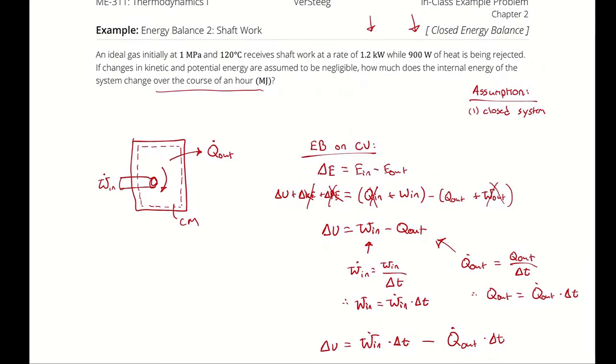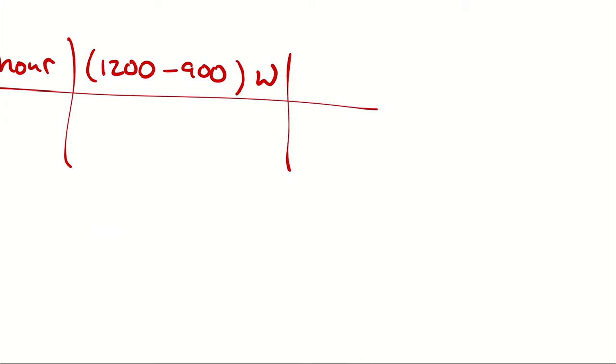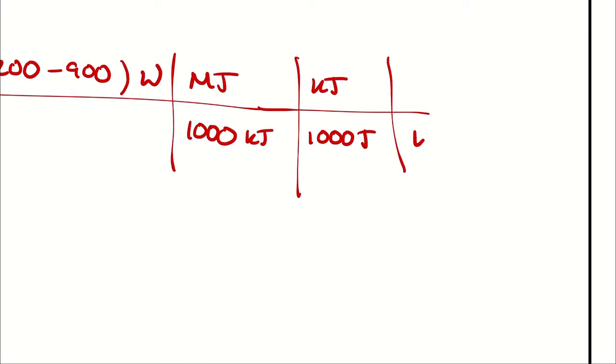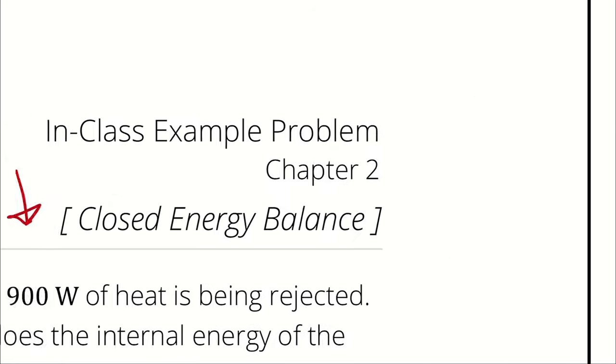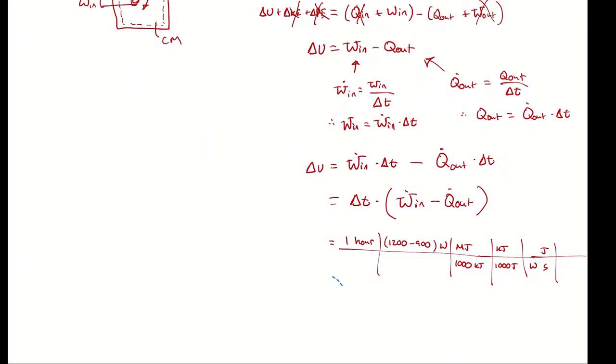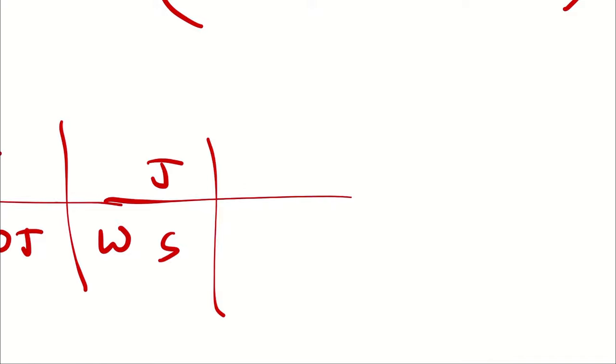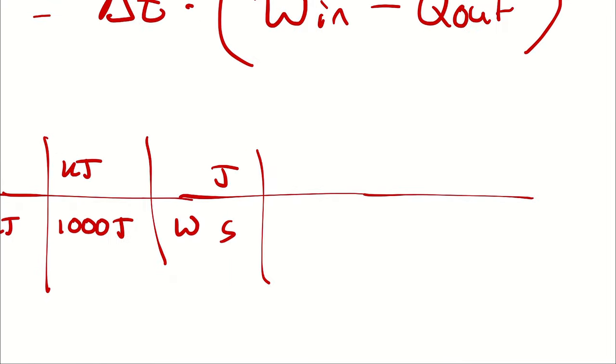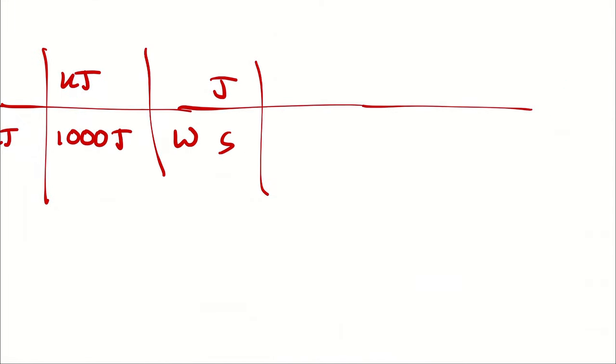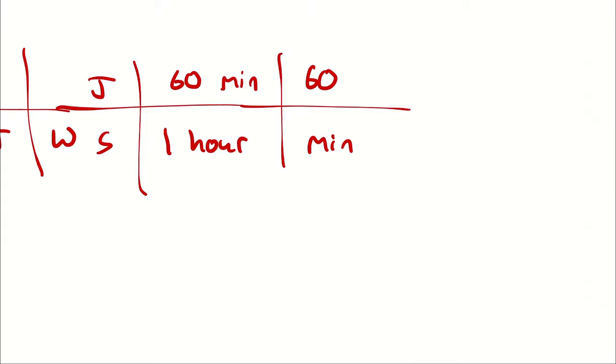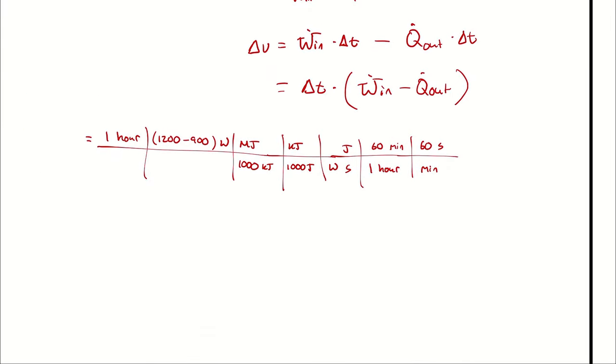And then I recognize that the problem wants an answer in megajoules. So I will begin to break apart my units here. A megajoule is a thousand kilojoules. A kilojoule is a thousand joules. A watt is a joule per second. And I'm out of space, so I will scoot this over. And then 1 hour contains 60 minutes. And most minutes contain 60 seconds. So then hour cancels hour. Joules cancels joules. Kilojoules cancels kilojoules. Watts cancels watts. Minutes cancels minutes. Seconds cancels seconds. Leaving me with megajoules.